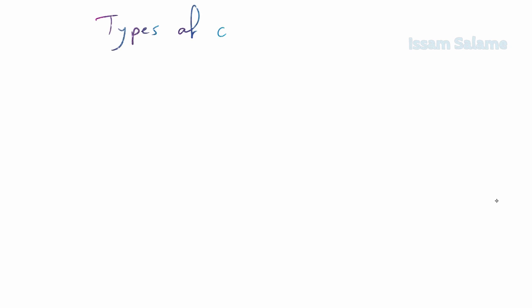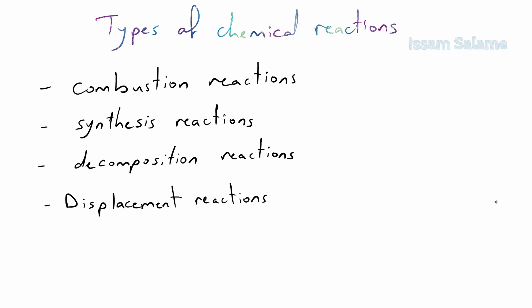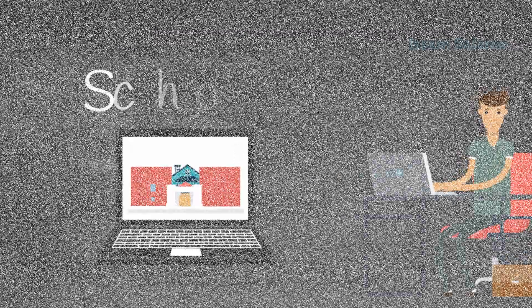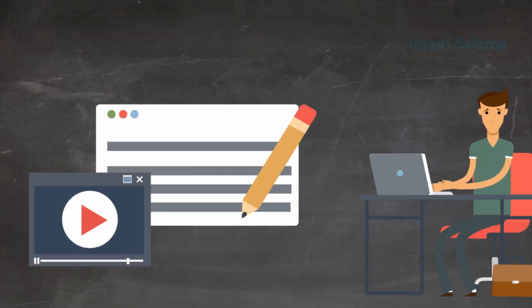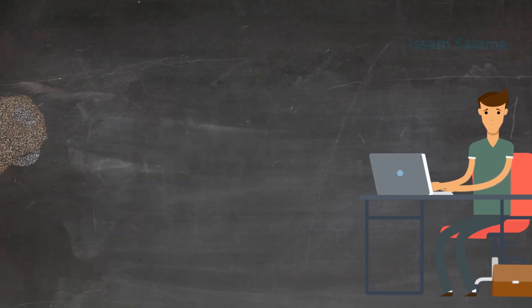In this video I'm going to describe some types of chemical reactions. I'm going to identify combustion reactions, synthesis reactions, decomposition reactions, and displacement reactions — single and double displacement. Welcome to Skoola, your online school. You may check your understanding by solving the end-of-video questions, and good luck.